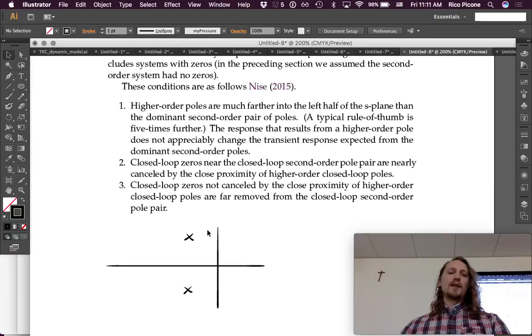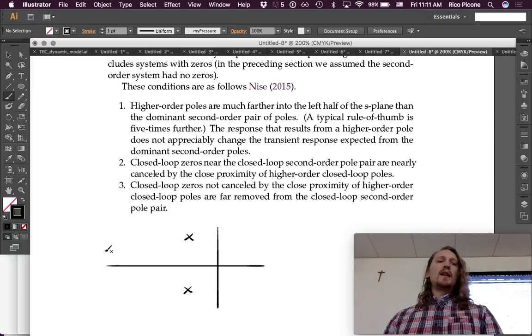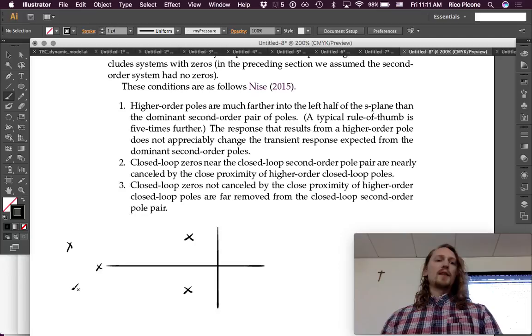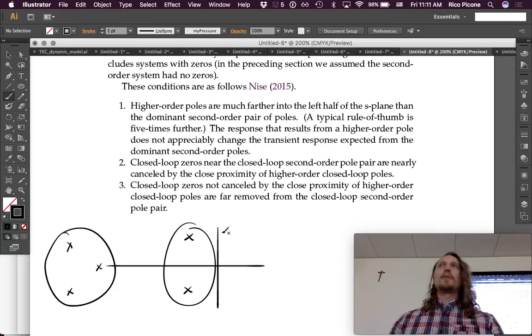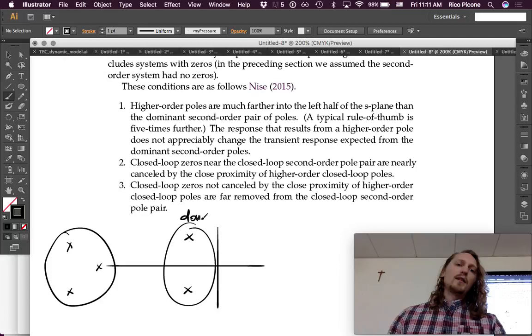So, if the next pole that you see is way out here, like on the real axis, or they can be off the real axis, the pole pair, these ones don't have as much of an effect on the transient response as these ones do. Okay? And so, these ones will dominate. So, we call them dominant poles.